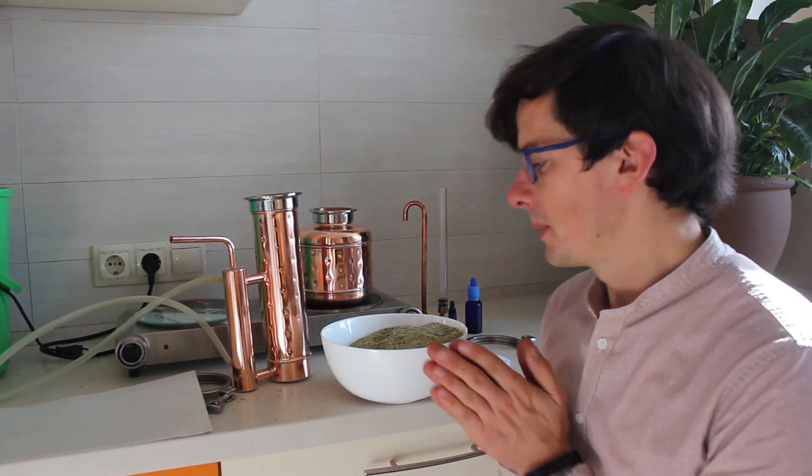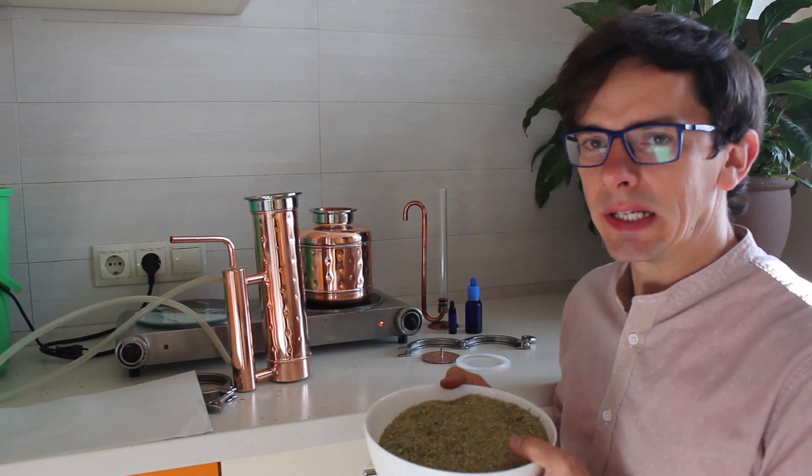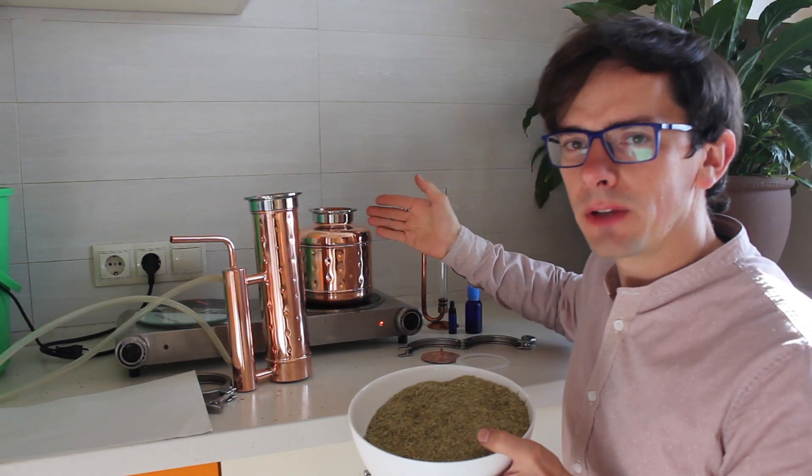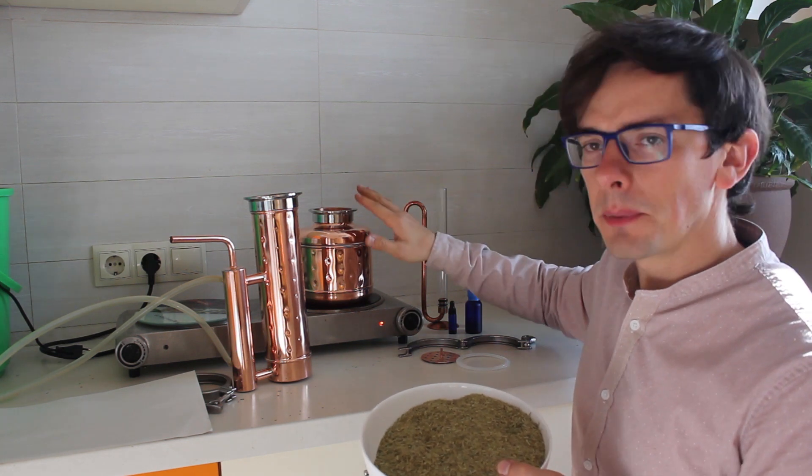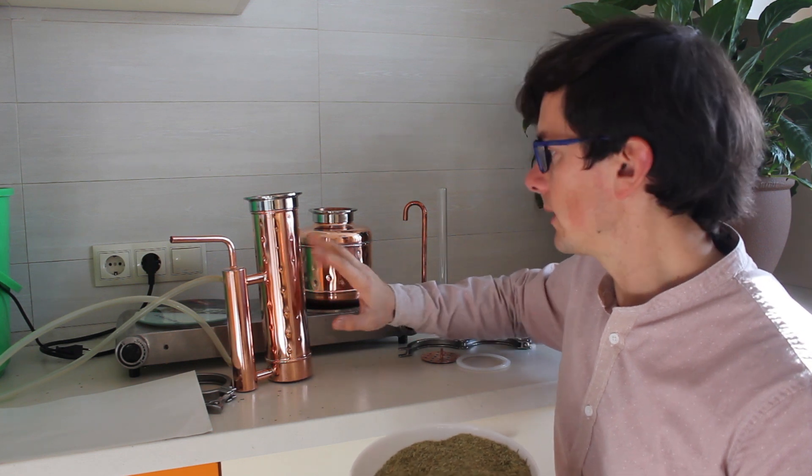Hello, my dear friends. Today we will be making essential oil out of rosemary, and for this we need Ukrainian flavor steel with a capacity of the pot 2 liters and the capacity of the flavor column 1 liter.